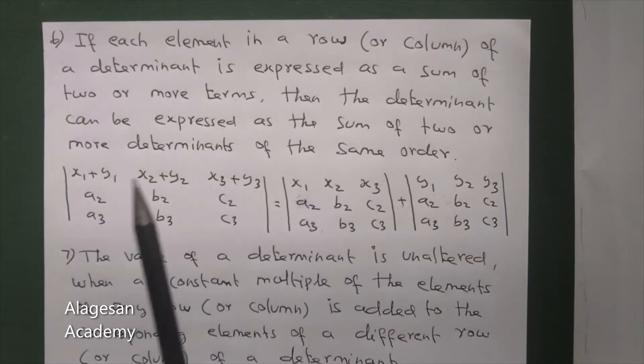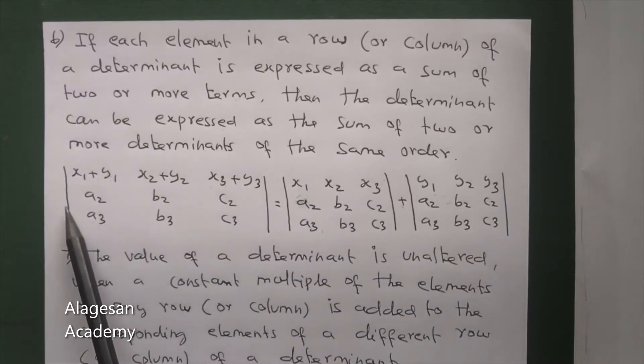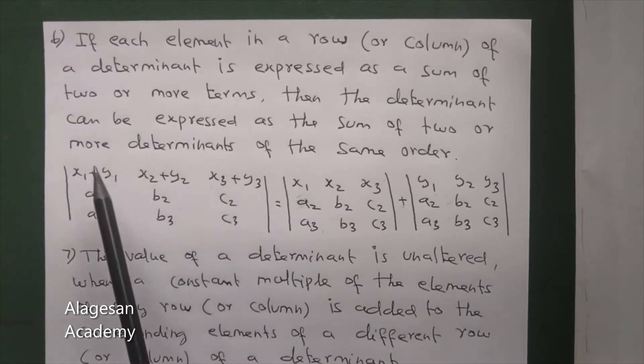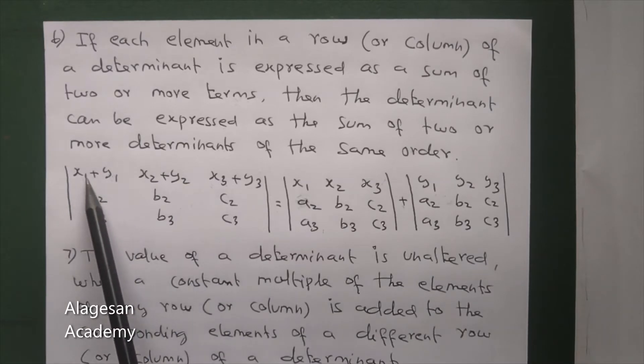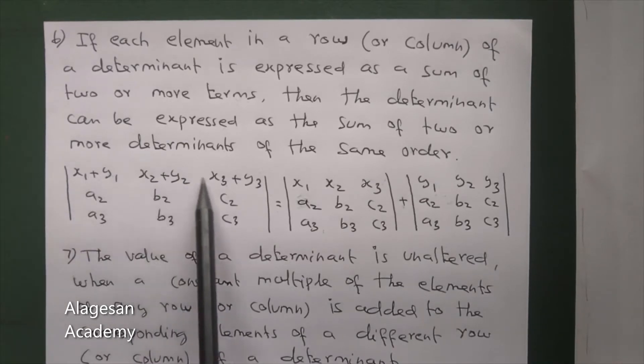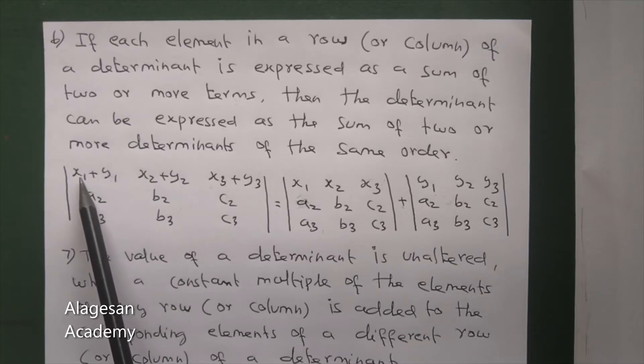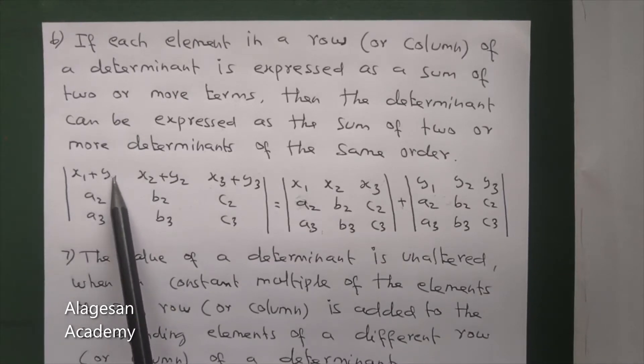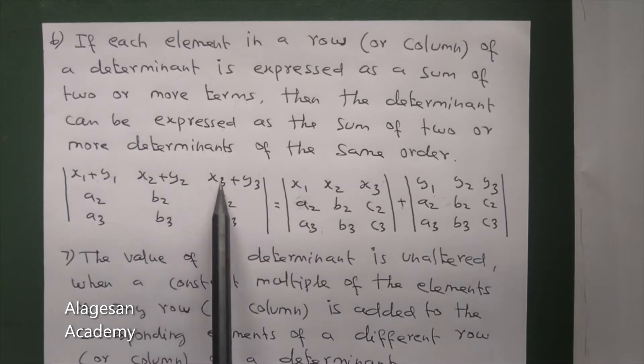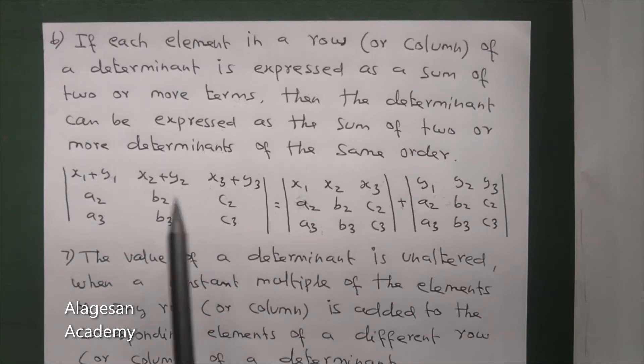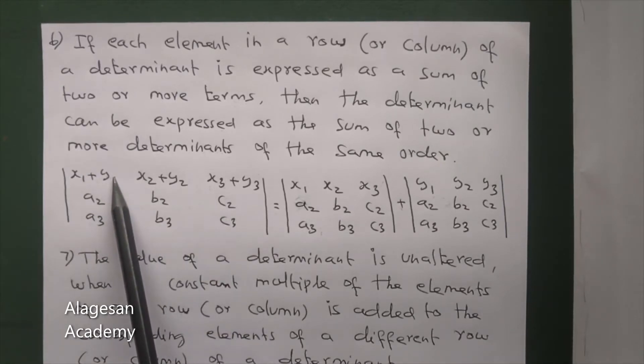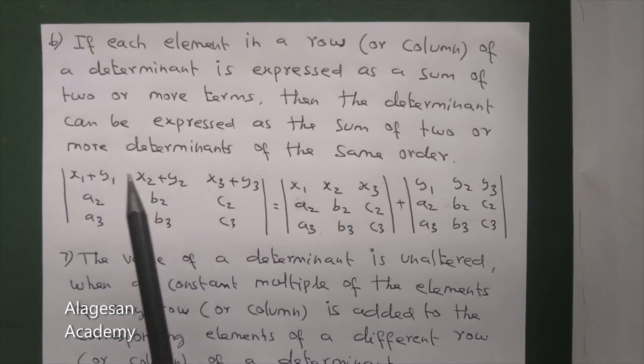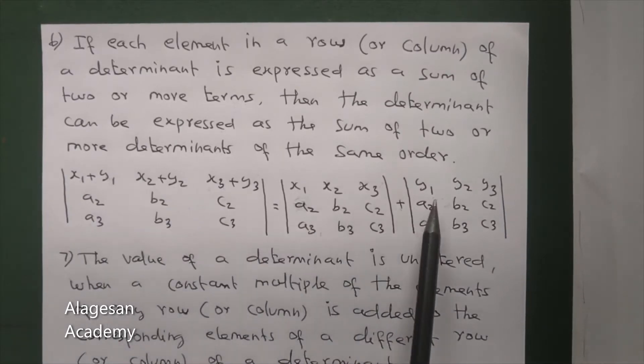For example, take this determinant. In this determinant, each element in the first row is expressed as sum of two terms. First row has each element as sum of two terms: x1 plus y1, x2 plus y2, x3 plus y3. Second row is a2, b2, c2 and third row is a3, b3, c3. So in this, the first row elements are all sum of two terms.